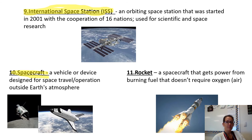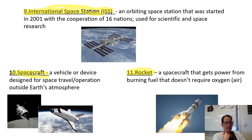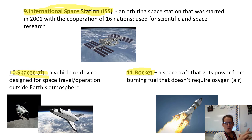Down here we've got spacecraft — a vehicle or device designed for space travel or operation outside Earth's atmosphere. Last but not least on this slide, we've got rocket — a spacecraft that gets power from burning fuel that doesn't require oxygen. Why would we want a rocket to not require oxygen to burn? Think about that and email me your answer — I'm curious what your thoughts are on this one.